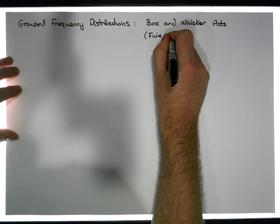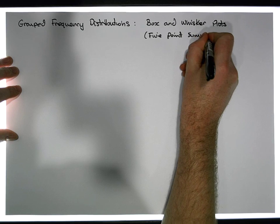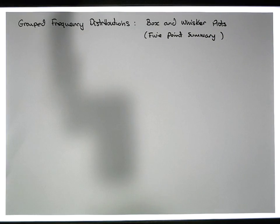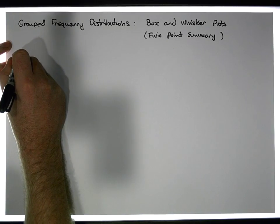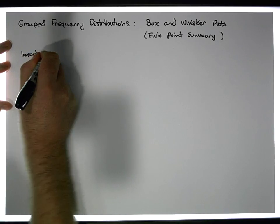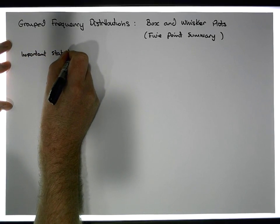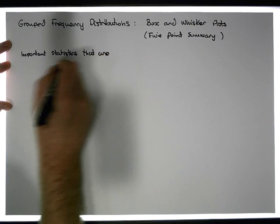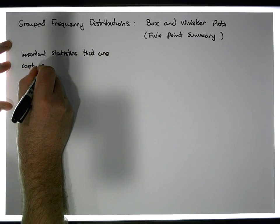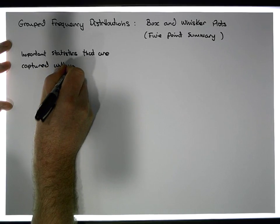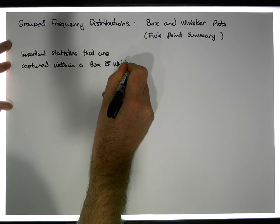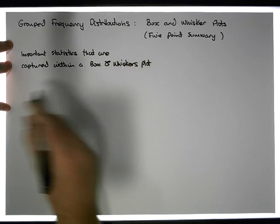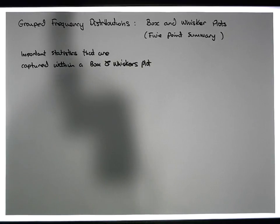With respect to five particular statistics, I'll list the important points from a five-point summary perspective — the important statistics that are captured within a box and whiskers plot. In no particular order, there is an actual ordering associated with these statistics, but I'll list them down without that order for now.